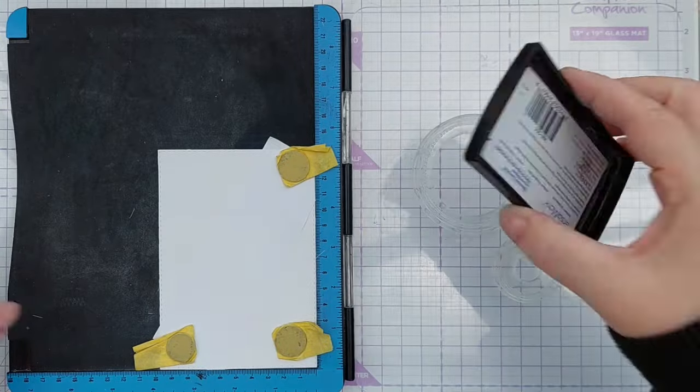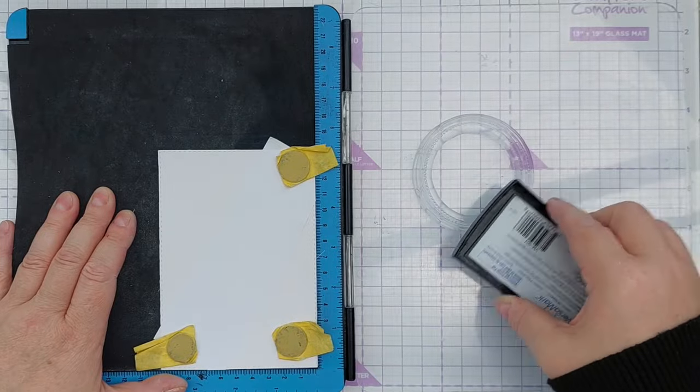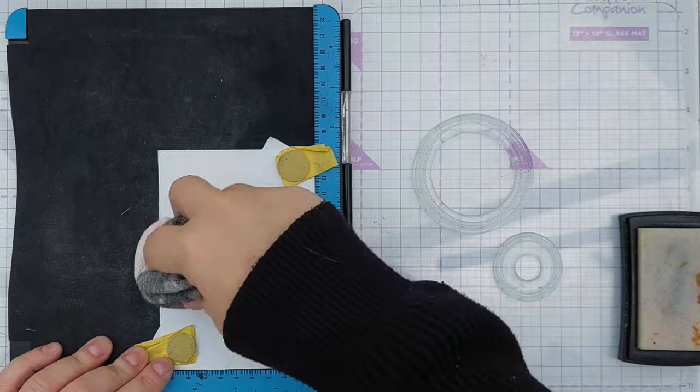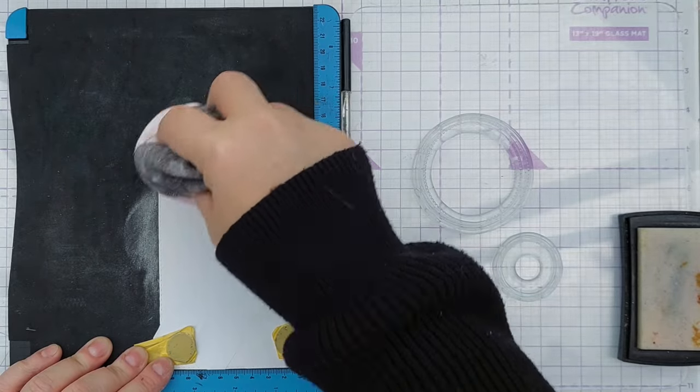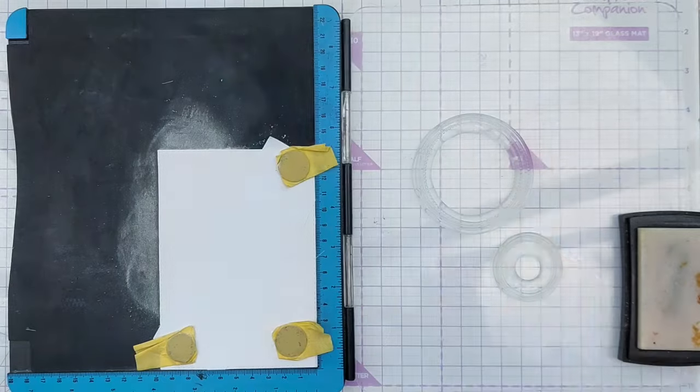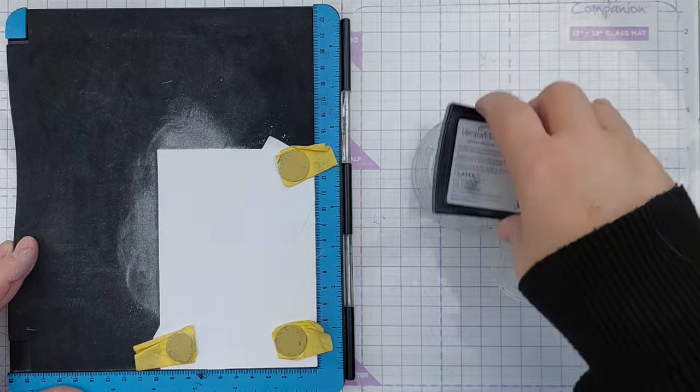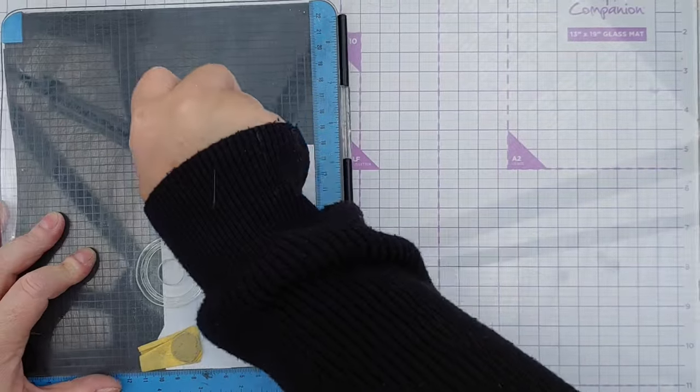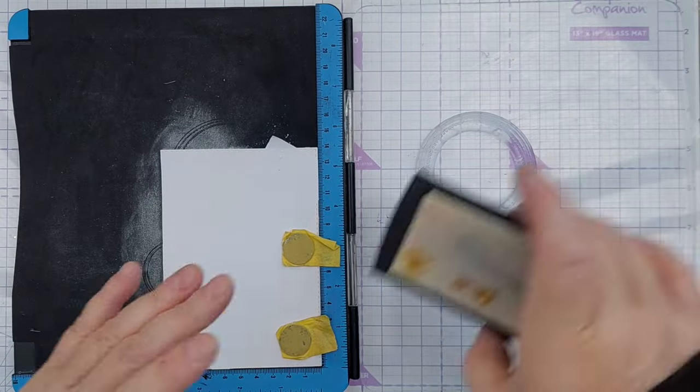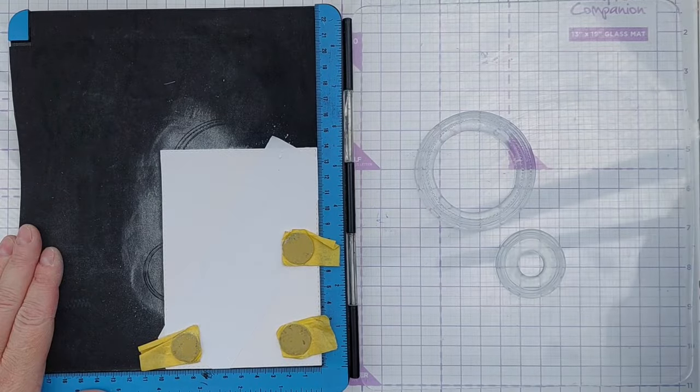I've got some embossing ink here so I'll ink up my circles, but I will put some anti-static powder on there. This is just cornflour in an old sock. You could use talcum powder or you can buy professional level anti-static pouches or tools. We'll just press that down so that we get a good impression.